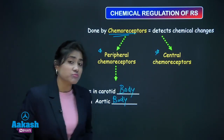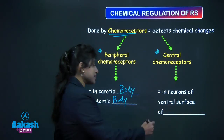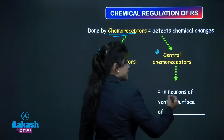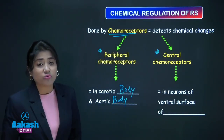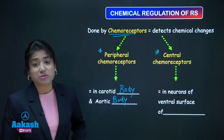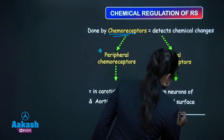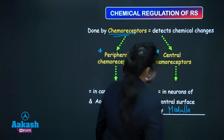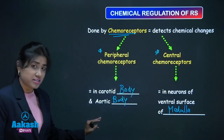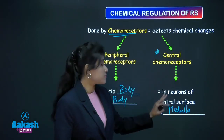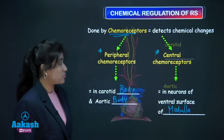Central chemoreceptors are present in the neurons of the ventral surface of the medulla. Peripheral chemoreceptors are in the carotid and aortic body, while central chemoreceptors are present in neurons of the ventral surface of medulla.